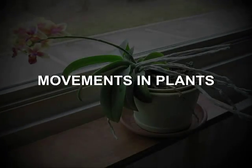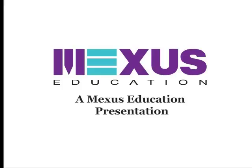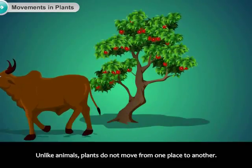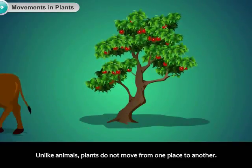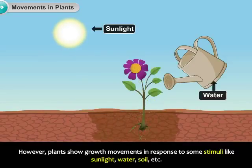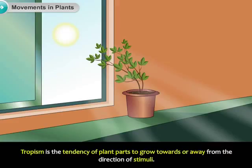Movements in Plants. Unlike animals, plants do not move from one place to another. However, plants show growth movements in response to some stimuli, like sunlight, water, soil, etc. Tropism is the tendency of plant parts to grow towards or away from the direction of stimuli.